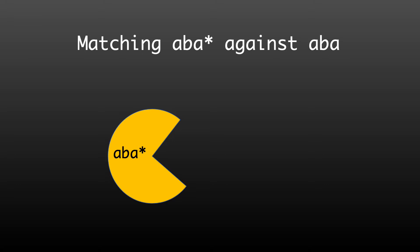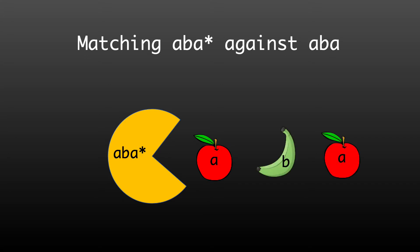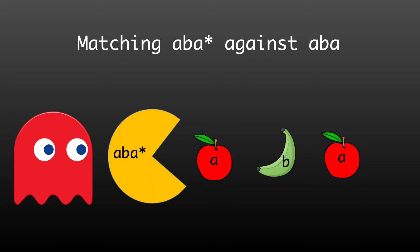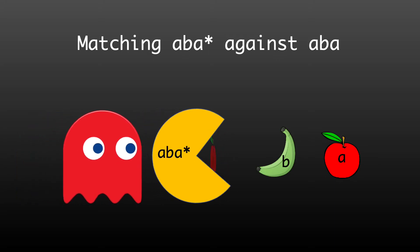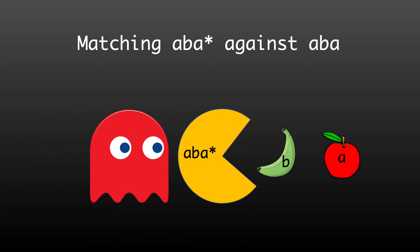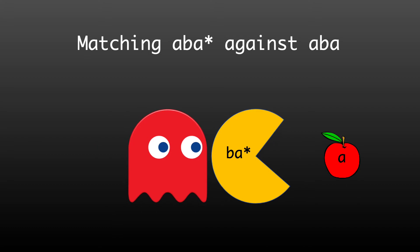Our Pac-Man represents the regex ABA star, and it has the following string of fruit to eat: an apple, then a banana, and then an apple. When we start, the ghost is chasing us as we haven't eaten fruit that matches our regex. So what we do — we eat an apple. Now the regular expression that we have left to match is B A star. But the ghost is still chasing us, as we've not eaten fruit that matched our original regex.